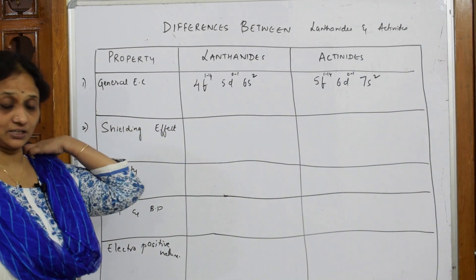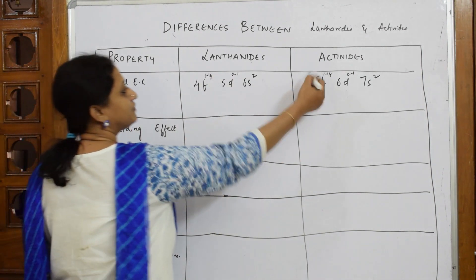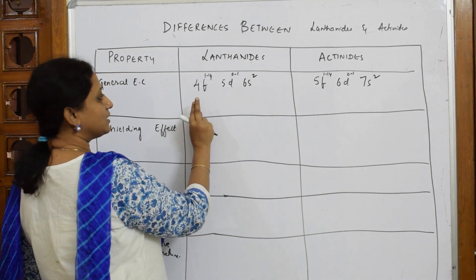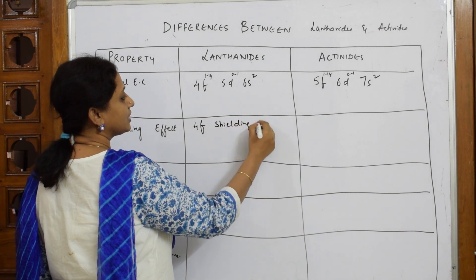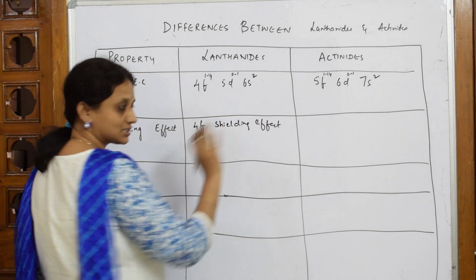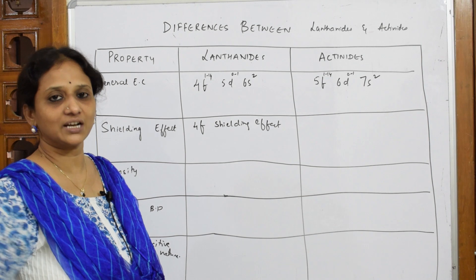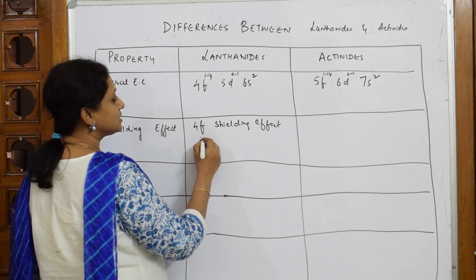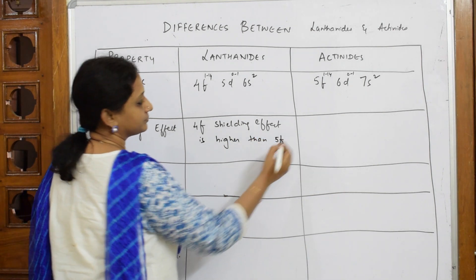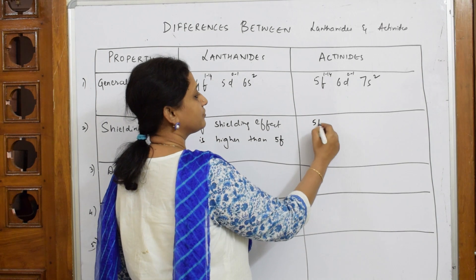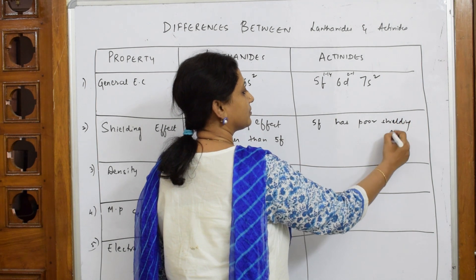When comparing shielding effect, we compare 4F and 5F orbitals. The 4F orbital in Lanthanides has a higher shielding effect compared to the 5F orbital in Actinides. Because of improper shielding in Lanthanides, they exhibit lanthanide contraction. The 5F electrons in Actinides have a lower shielding effect.